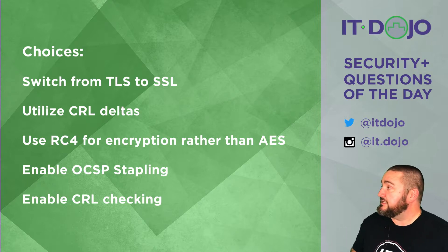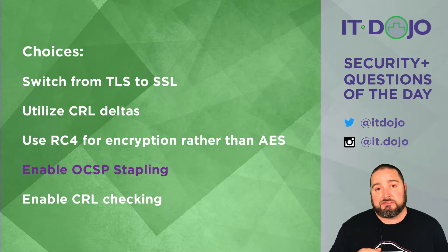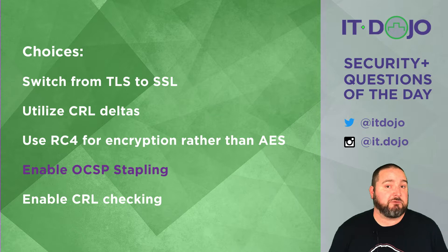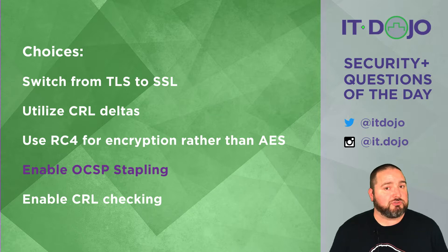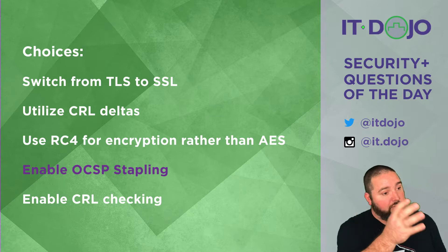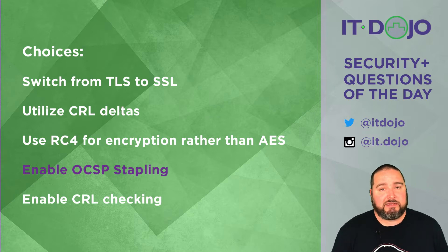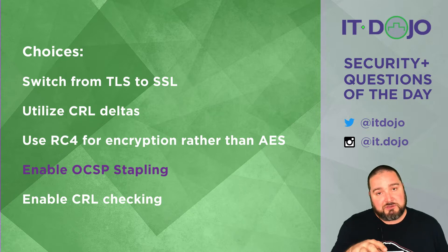The next choice says that you could enable OCSP stapling — this is the correct answer. The Online Certificate Status Protocol, OCSP, is viewed by most people as the replacement for certificate revocation lists. It operates more on a client-server approach rather than a download-a-potentially-big-file approach like old-school CRLs. With OCSP, you go to a website and then query an OCSP server to see whether or not that website's certificate has been revoked. There are some privacy security concerns associated with that, and so a lot of people frown upon OCSP for that reason. One of the solutions for that is OCSP stapling.